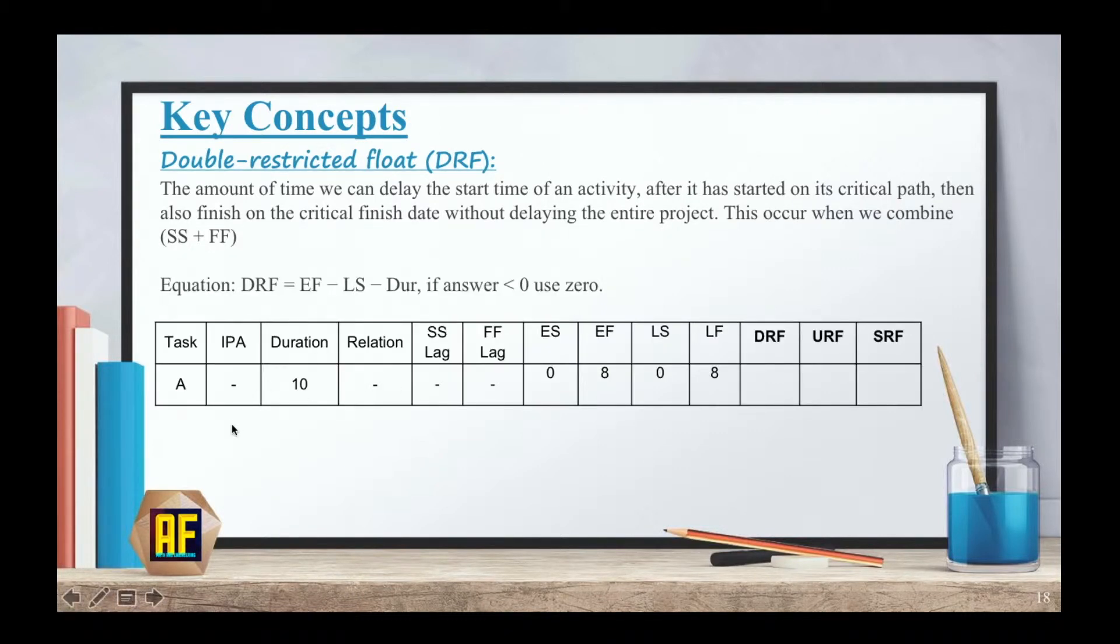Now let's take activity A for example. Activity A has a duration of ten days. Here is our early start, early finish, late start, late finish. And let's use the equation. EF equals eight, LS equals zero and duration is ten and our answer is minus two. So minus two equals zero, and our DRF is zero.